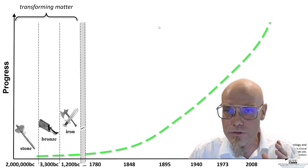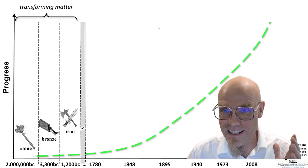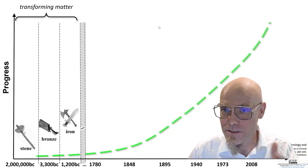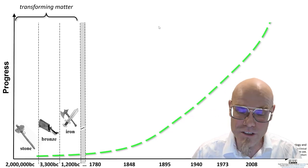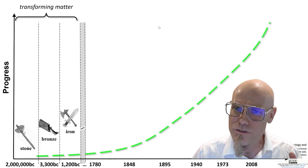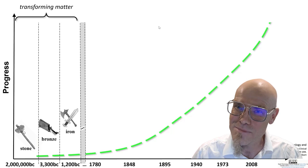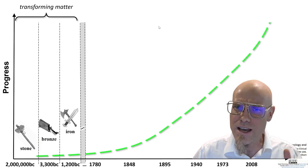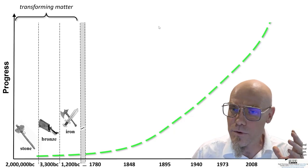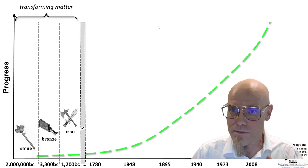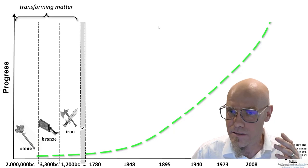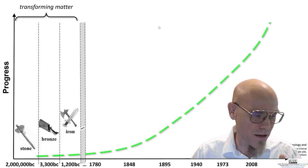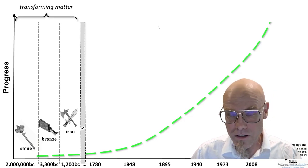In the first paradigm, we started to learn how to dominate matter. That goes back to the stone age, the Homo habilis, when we started to distinguish ourselves from the rest of the animals because we started to use tools. The Homo habilis — the handyman — started to use tools, and then came the bronze age and the iron age. We started with that to work the land, to explore countries. It was very important to own land and to work matter.